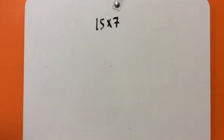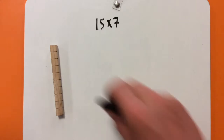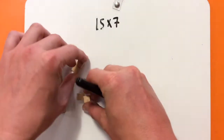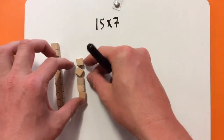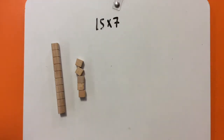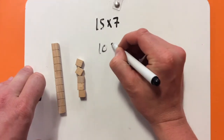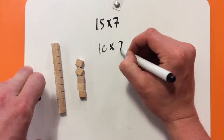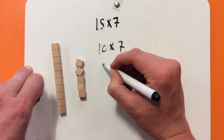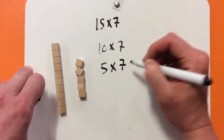15 times 7 may seem like a really difficult problem, but it's actually pretty simple if you know the right method. We're going to break this problem down using place value. I'm going to start with my 15, but I'm not going to multiply it all at one time. I know in 15 I've got a 10 and I've got a 5. So I can do 10 groups of 7, or 7 groups of 10, and I can do 5 times 7.